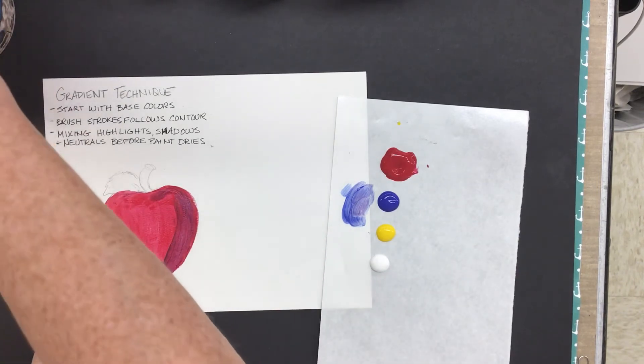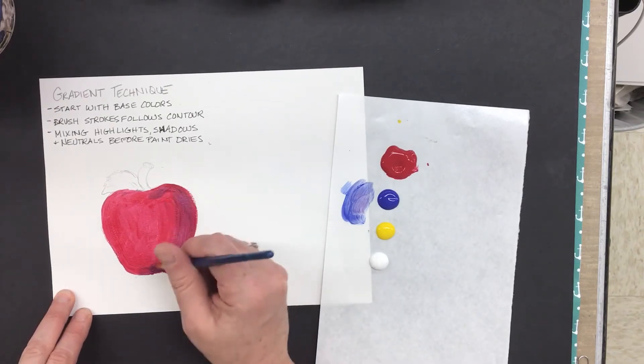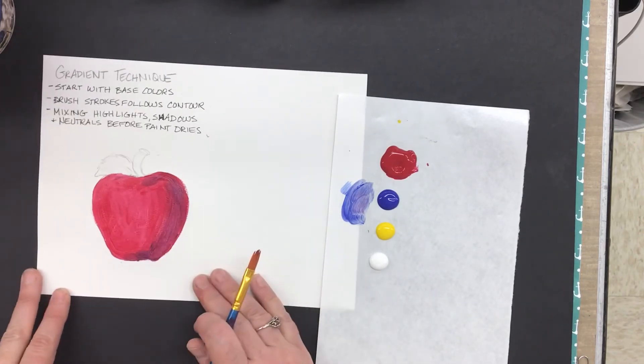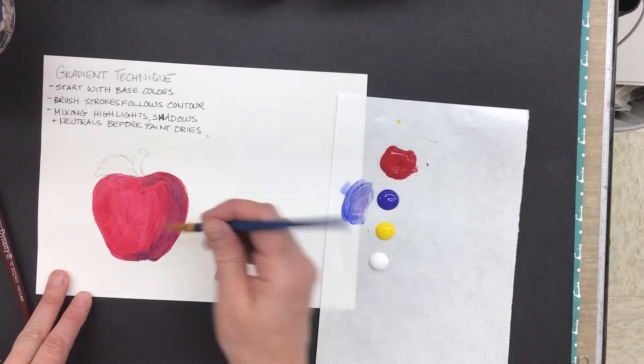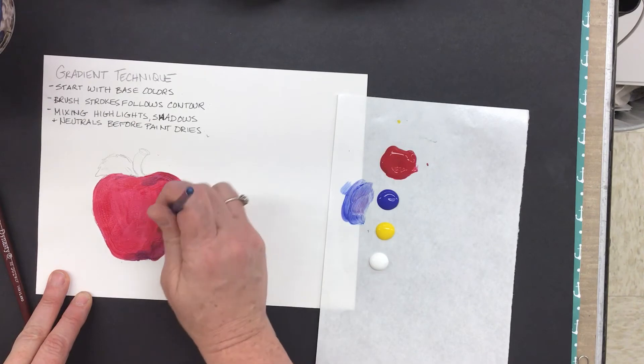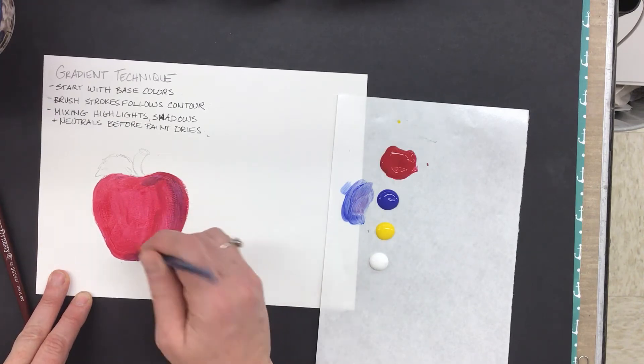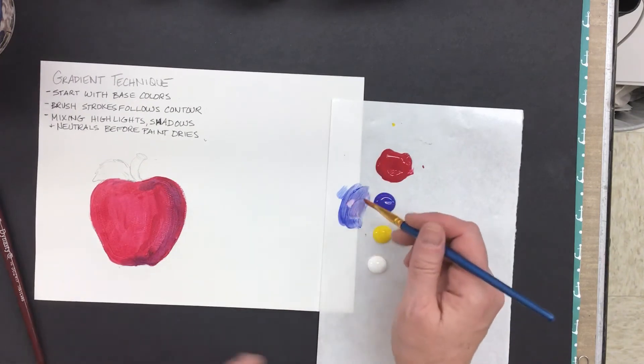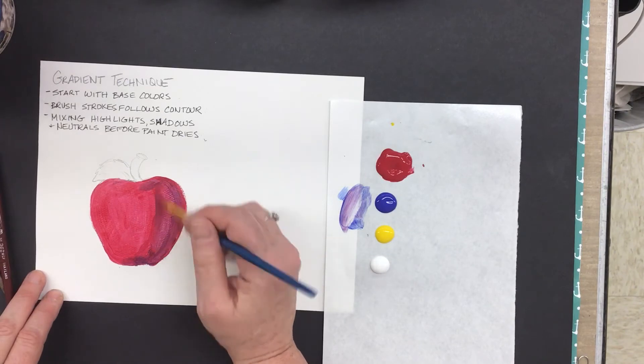I can clean the brush and then with a dry brush go back in and smooth that transition out a little bit. Or you can go back in with a little bit of the base color and add some of that red back in. So if this is the shaded side of my apple over here,